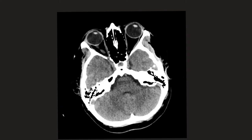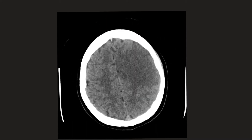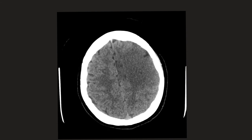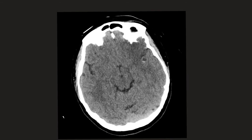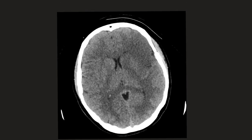Looking at this case, as we scroll through, we can see there's abnormality in the left MCA territory. There is low attenuation in a wedge shape, extending out from the white matter and all the way going into the grey matter. Looking further down in the same scan, we can see that they have a dense left MCA, which accounts for the cytotoxic oedema.